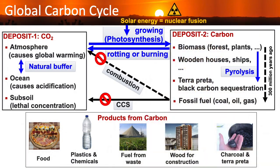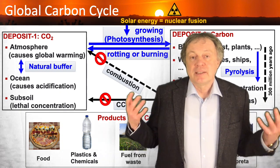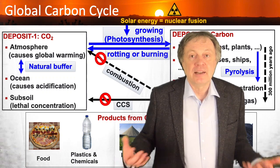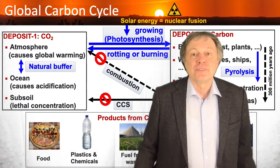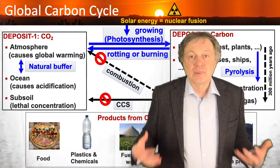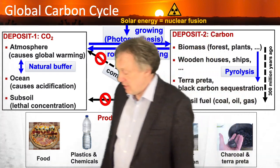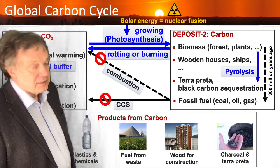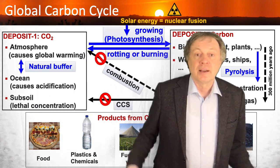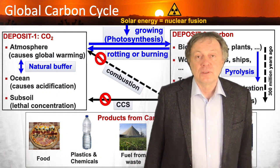In my previous lecture I explained the global carbon cycle, where we mentioned CCS already. Looking back at that complex diagram, there were two basic deposits where carbon is stored at large scale. On the left is the storage of CO2 — the burnt gas — in a rather inactive, inert chemical form. The second deposit is where carbon in its pure form, like in coal, biomass, or similar materials, is stored.